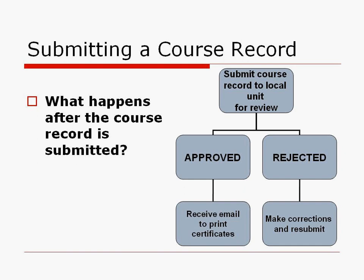After you've entered all the course record information and clicked Submit, one of two things will happen. Most likely your course record will be approved within one business day, and you'll receive an email notification letting you know it has been approved — you can view it, print it, and print certificates for students. Every once in a while a course record will be rejected, usually due to a typo or incorrect information. You'll receive an email notification explaining why it was rejected, with a list of what needs to be fixed so you can resubmit.